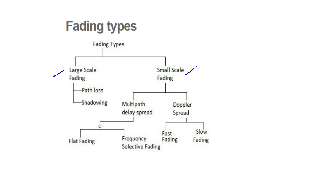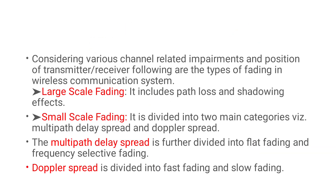Large scale fading and small scale fading. Small scale fading is connected through the path. Under small scale, we have multipath delay spread and Doppler spread. Multipath delay spread gives flat fading and frequency selective fading. Doppler spread gives fast fading and slow fading. What is large scale fading? Large scale fading is a path loss and shadowing effect. For small scale, there are two categories: multipath delay spread and Doppler spread.